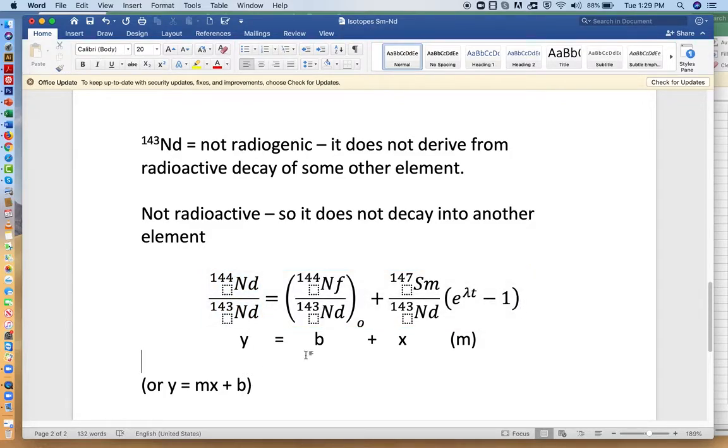And again, just like with the earlier system, we have this equation, y is equal to b plus x times m. So this is our y. We want to plot 144 over 143 on the vertical axis.